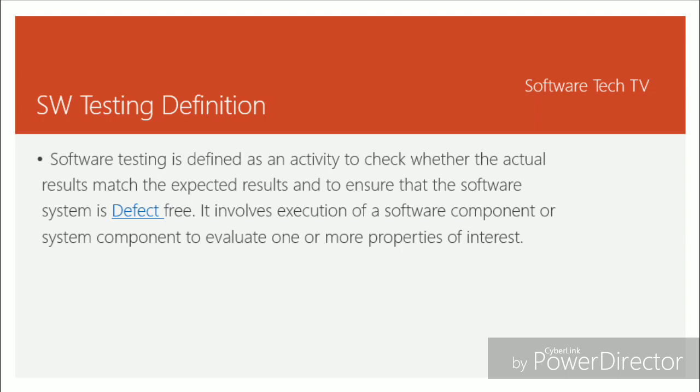Coming to the software testing definition: software testing is defined as an activity to check whether the actual results match the expected results and to ensure that the software system is defect free. It involves execution of a software component or system component to evaluate one or more properties of interest. Overall, software testing is to find out defects and to ensure the software is working fine.